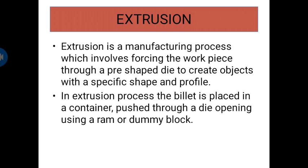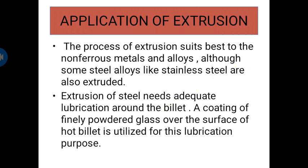As the material flows through the die, it will take the shape of the die opening. In the extrusion process, the billet is placed in a container and pushed through a die opening using a ram or dummy block. This process suits best to non-ferrous metals and alloys, although some steel alloys like stainless steel are also extruded. Extrusion of steel needs adequate lubrication; a coating of finely powdered glass over the surface of the hot billet is used for this purpose.